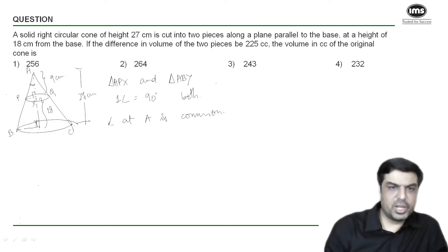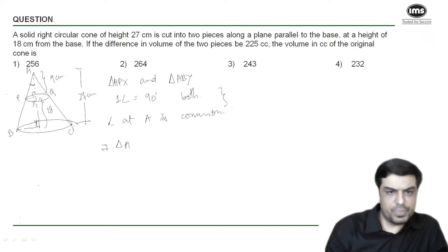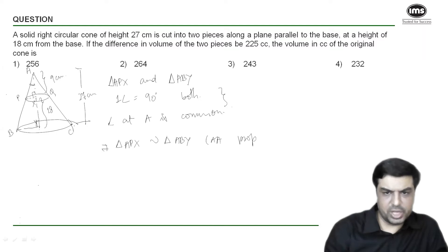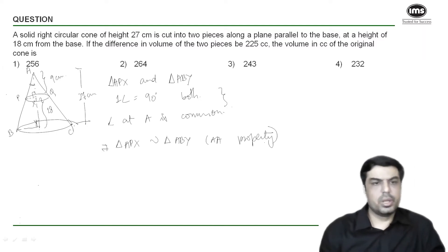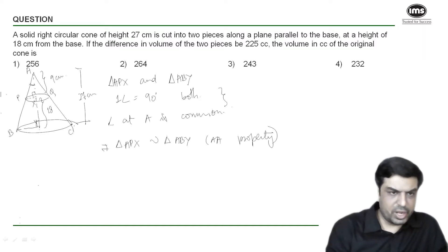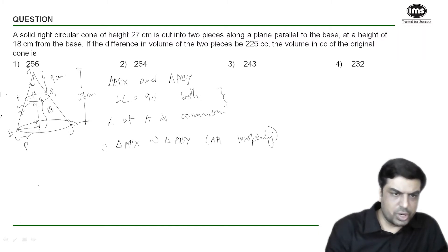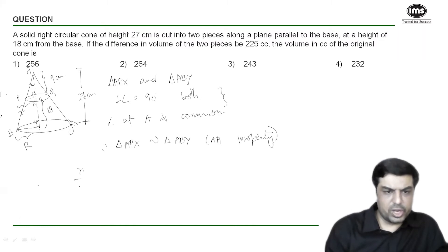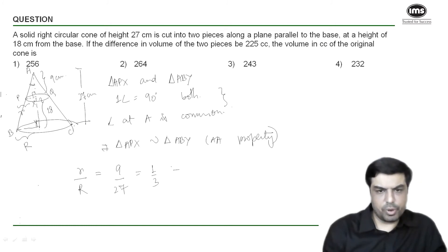Both triangles have two angles equal. Making use of the angle-angle property, I can say triangle APX is similar to triangle ABY. Once we know the triangles are similar, we know that the ratio of their sides will be constant. If the radius of the smaller cone is small r and the radius of the larger cone is capital R, the ratio of their radii equals the ratio of their heights, which is 9 to 27, that is 1 to 3. So R is equal to 3 times small r.